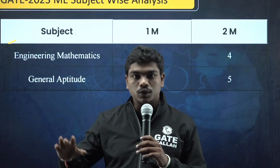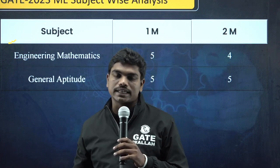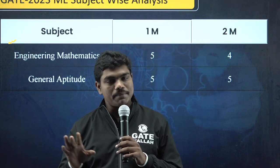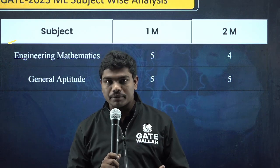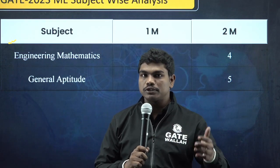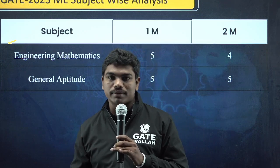This year, maths and aptitude got fixed weightage in GATE examination. In aptitude we have 5 one-mark questions and 5 two-mark questions, which were relatively easy compared to last years. Mathematics has a fixed weightage of 13 marks: 5 one-mark questions and 4 two-mark questions.